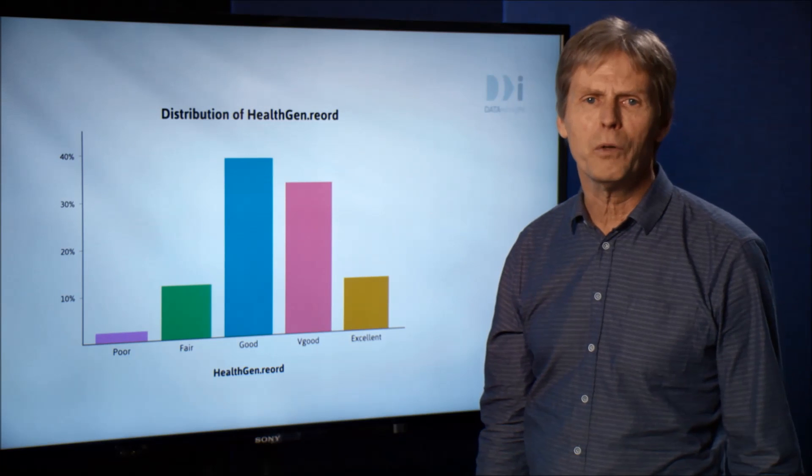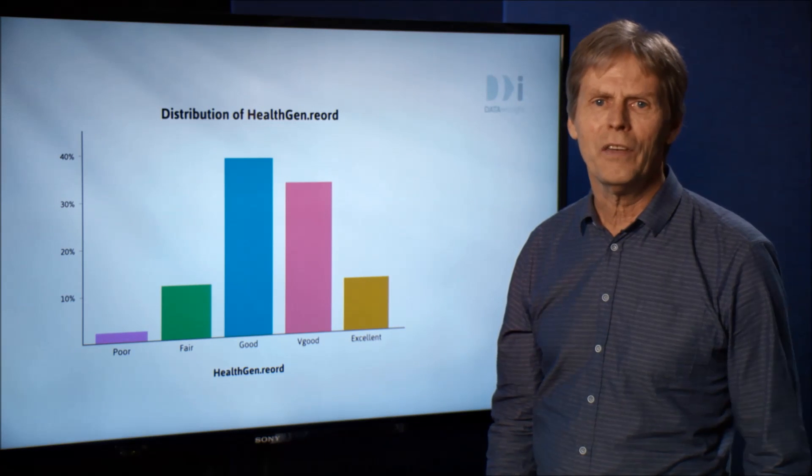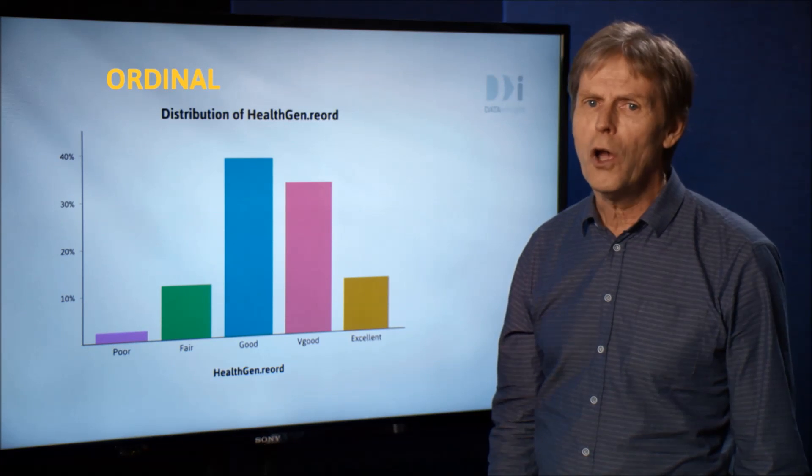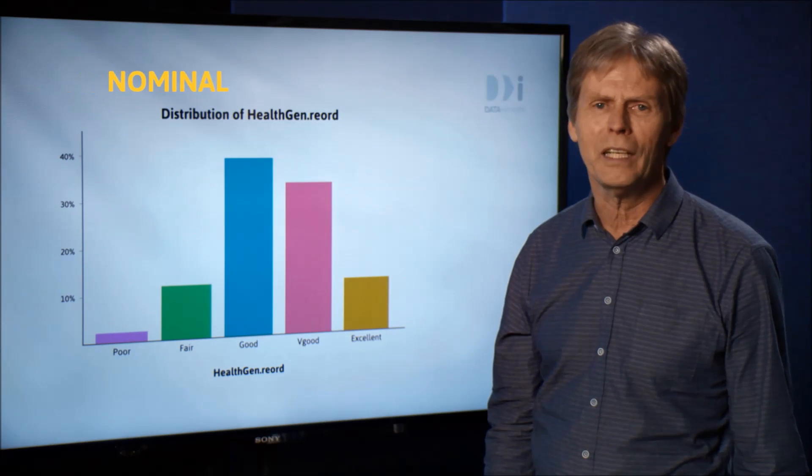We'll pause for a little bit of name calling. If the categories have a natural ordering, the variable is said to be ordinal. If there's no natural ordering, the variable is said to be nominal.